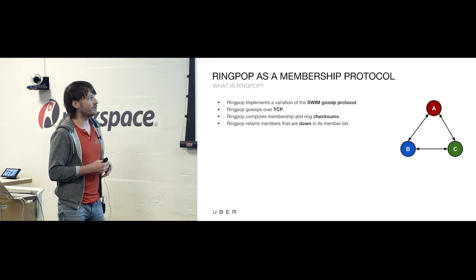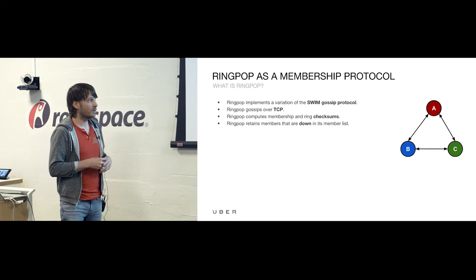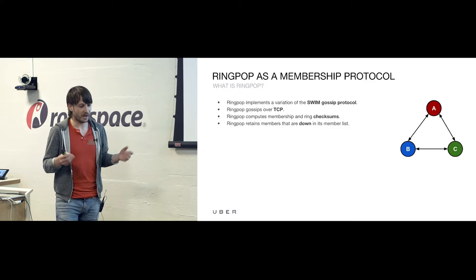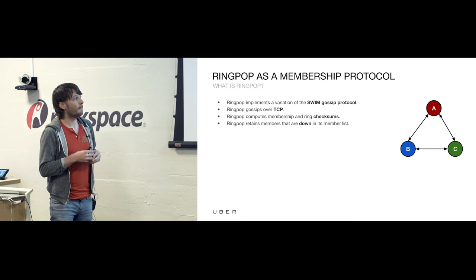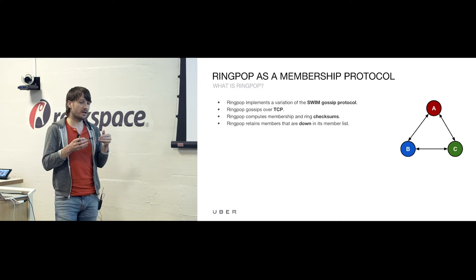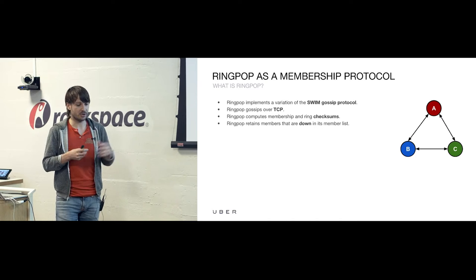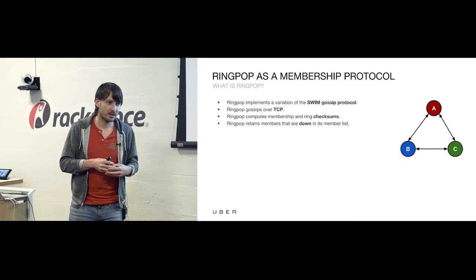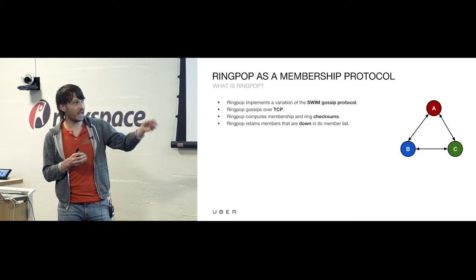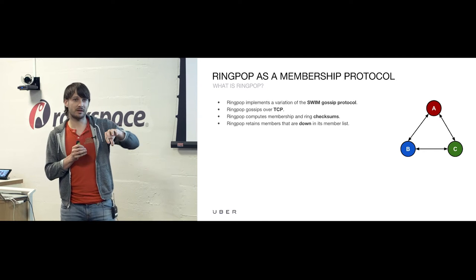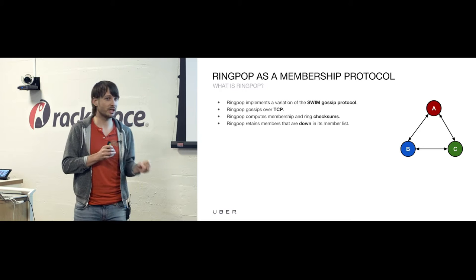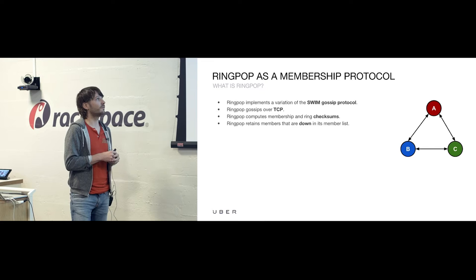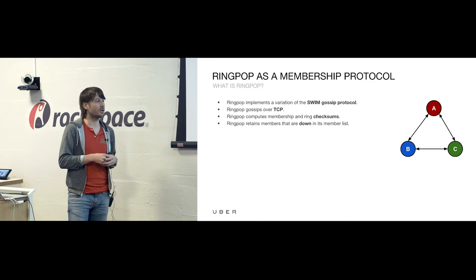Let's say you had a two-node cluster and C came along. A and B had been pinging each other, but C joined. Maybe C asked B to join, so B knew about C but A didn't. The next time B pings A, it disseminates the knowledge that C has become part of the cluster. That's the dissemination part of the SWIM gossip protocol.